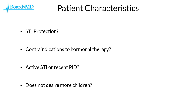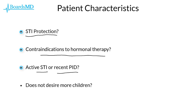For the purposes of examinations, if we simply know the answers to four key questions then we can easily select the correct answer choice and determine the correct type of contraception for our particular patient. These four questions are: does the patient desire STI protection? Does the patient have any contraindications to hormonal therapy including estrogen and progesterone? Does the patient have an active sexually transmitted infection or a recent episode of pelvic inflammatory disease? And lastly, very important for OB-GYN especially on examinations, does the patient desire future children? If you simply keep these four key questions in mind, you will have no trouble selecting the correct answer.